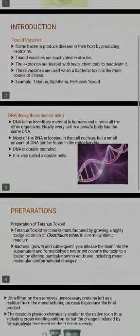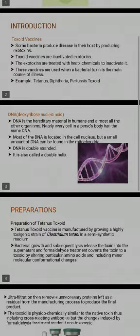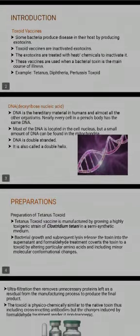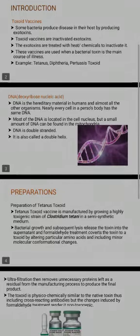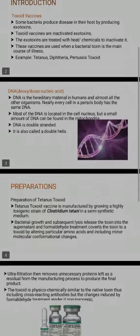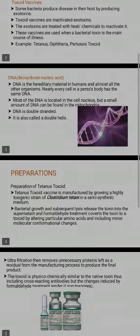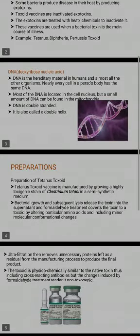DNA means deoxyribonucleic acid. DNA is the hereditary material in humans and almost all other organisms. Nearly every cell in a person's body has the same DNA. Most of the DNA is located in the cell nucleus, but a small amount of DNA can also be found in mitochondria.